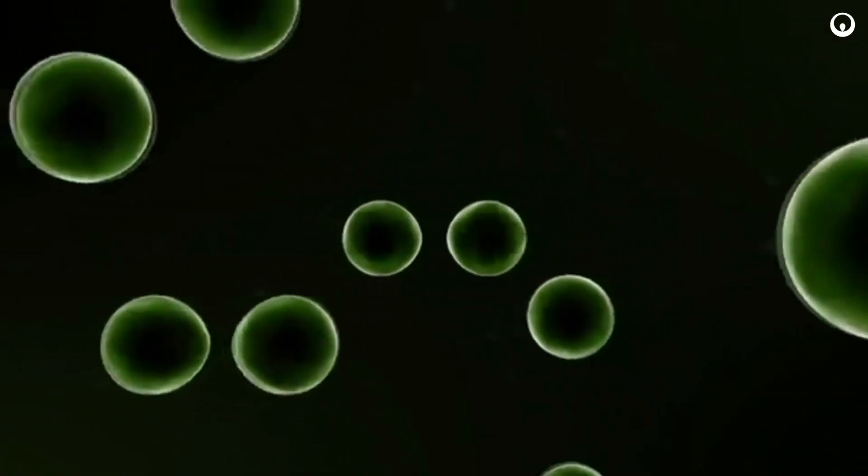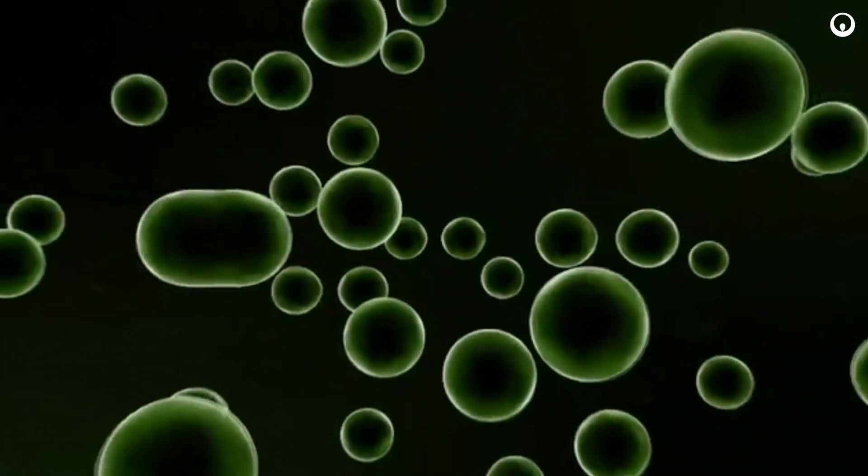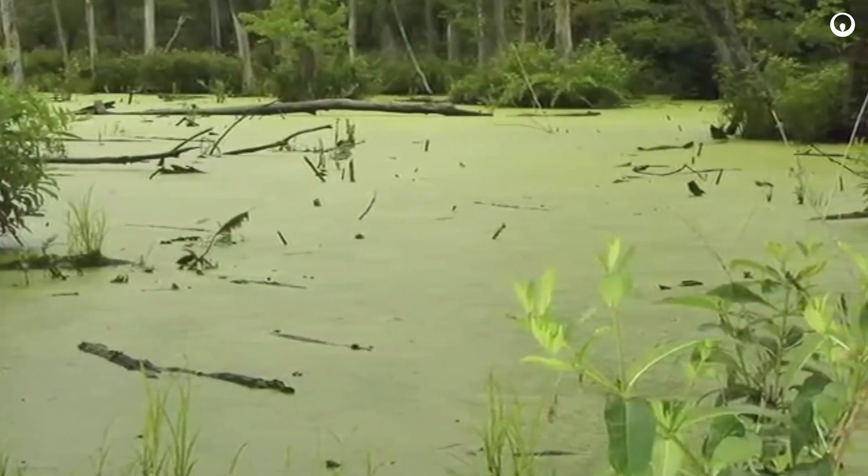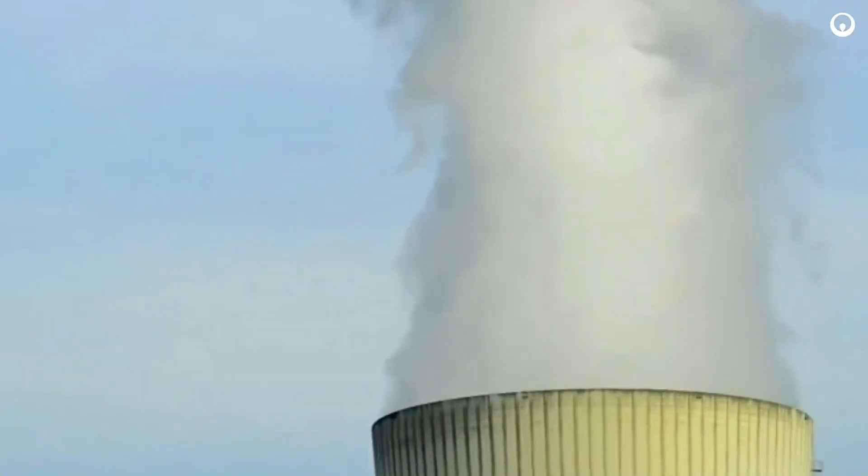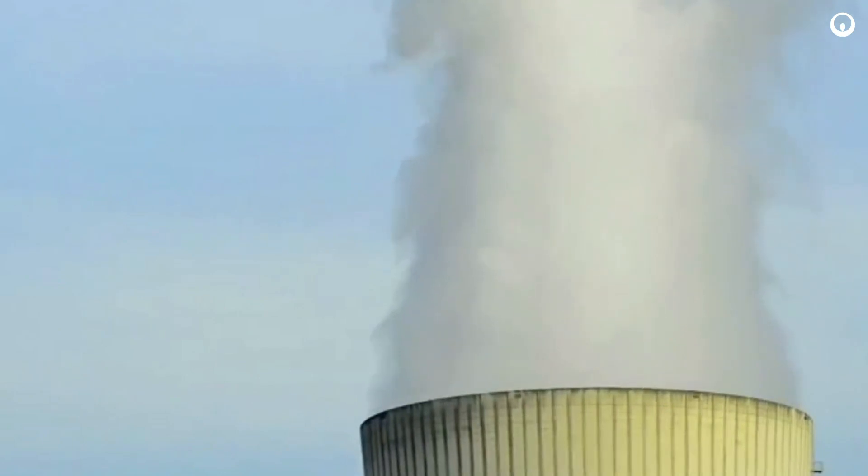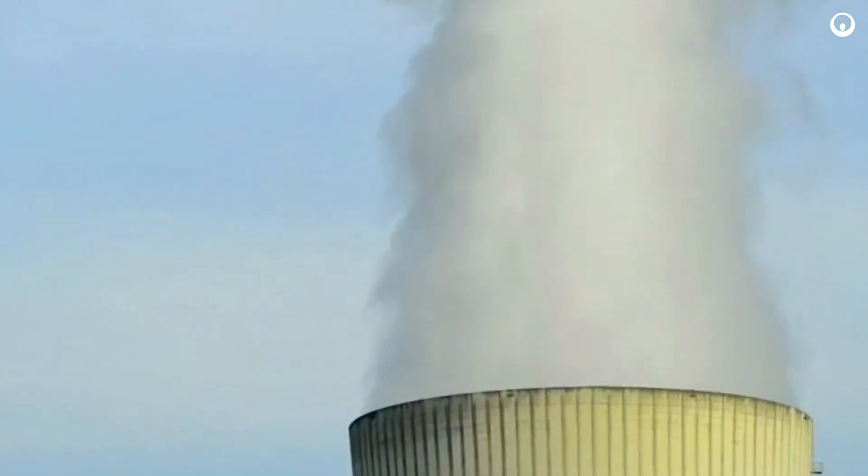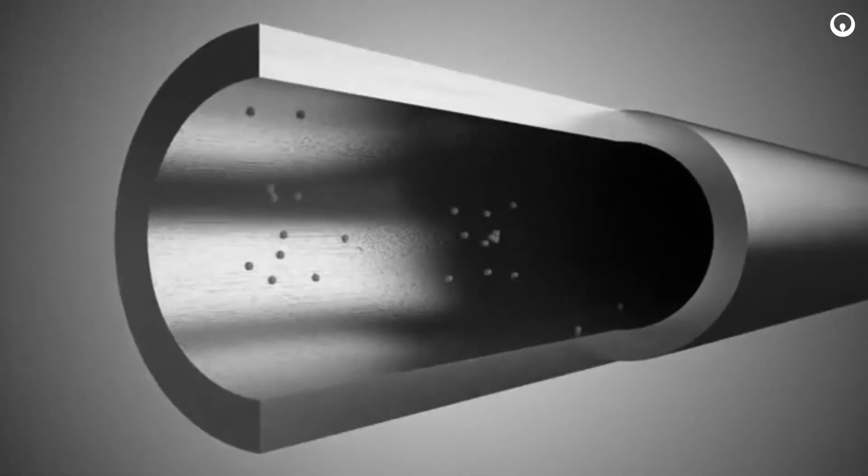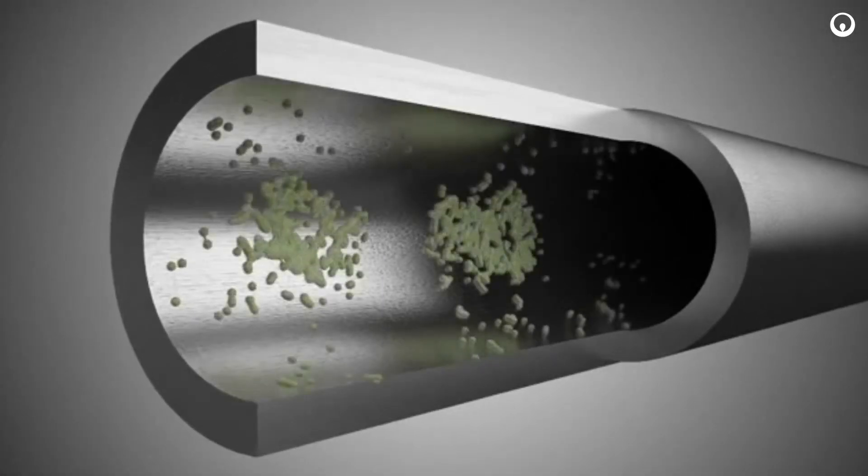Microscopic organisms multiply and form large visible biological deposits in the water and on the surface. Microbes are also present in various industrial waters, such as cooling systems. They attach to pipe walls, cooling tower fill, and any submerged or wet surface and create what's called a biofilm.